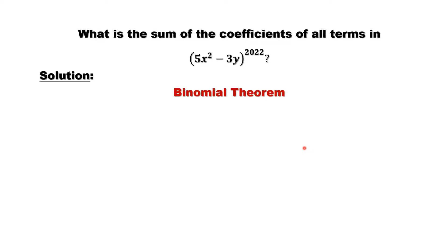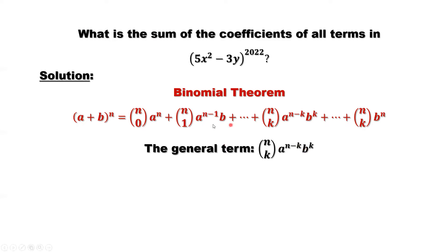We use the binomial formula to do our analysis. This is the binomial formula. What is the general term from this binomial formula? This part. That's n choose k times a to the power n minus k times b to the power k. a is the first term, b is the second term.